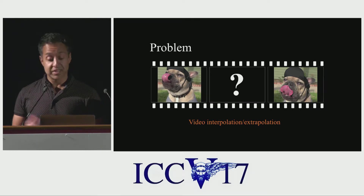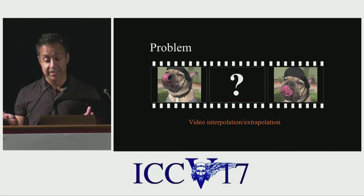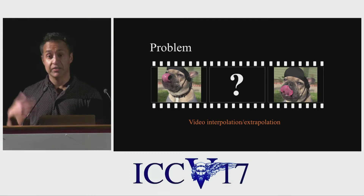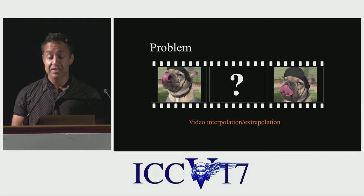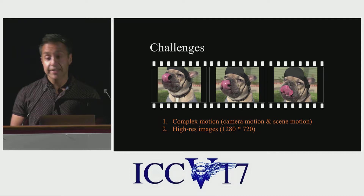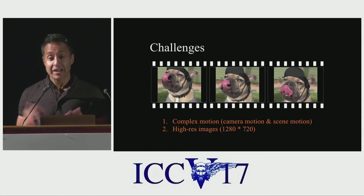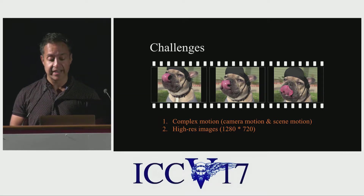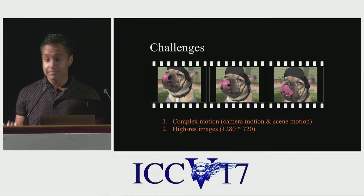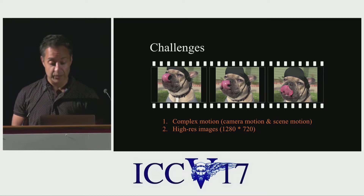The problem we're addressing is one of video interpolation. Given two frames of video, we want to hallucinate a new frame in between the existing pair. For example, we could take a 15 frames per second video and make it 30 frames per second, or simulate a slow motion effect. This is a pretty common task in video and visual effects. It's also surprisingly challenging — a lot of things can happen in a 15th of a second: objects can include and exclude each other, objects can deform, lighting can change, fast motions can happen.